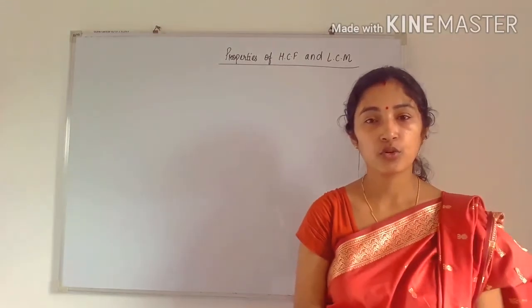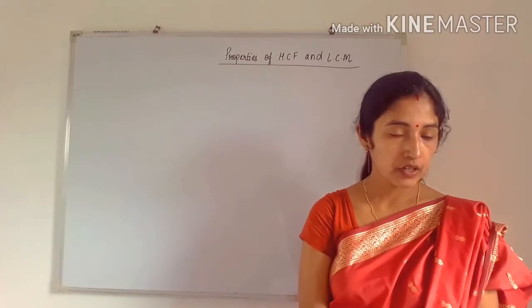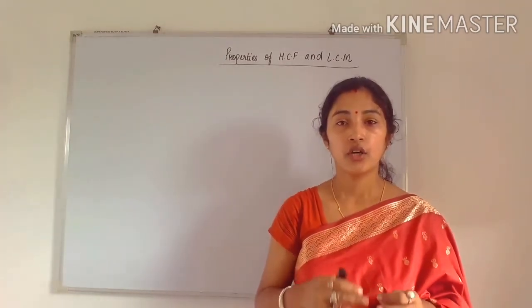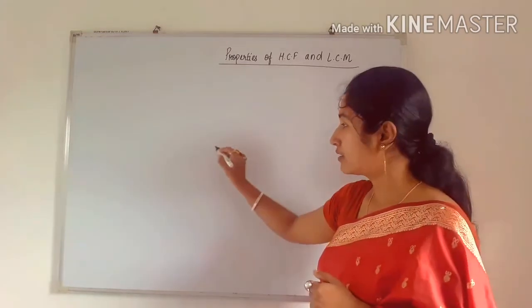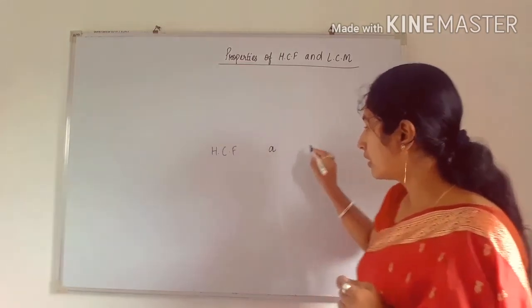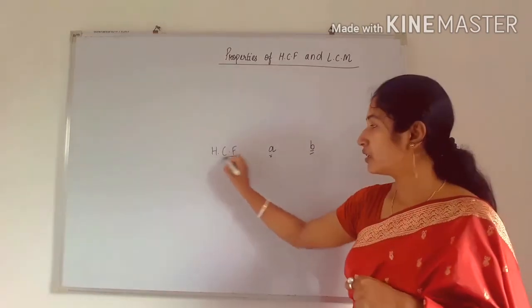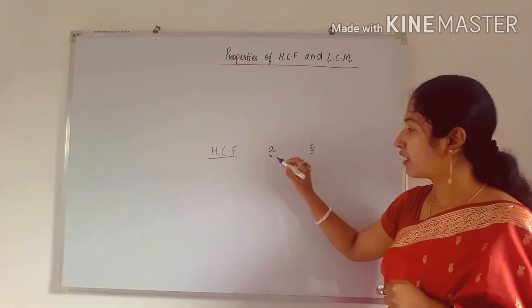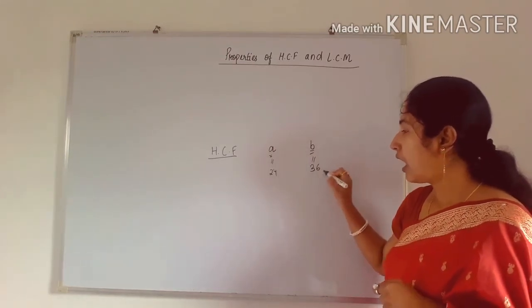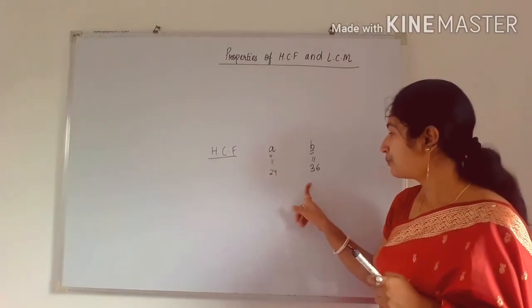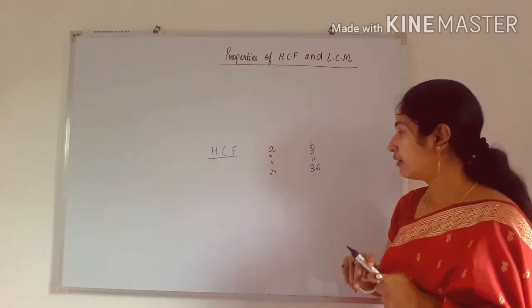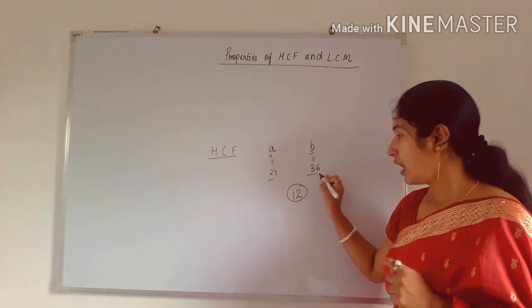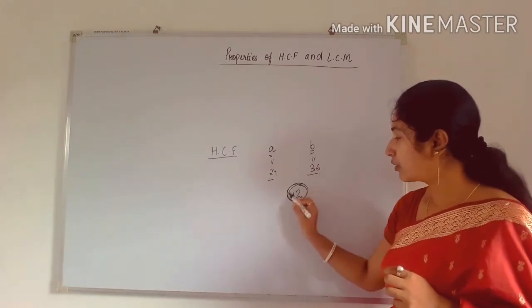There are different properties of HCF and LCM. First property: given any two numbers and their HCF, there are three things — the two numbers and the HCF. The relation is that HCF is the smallest among the three. For example, if the two numbers are 24 and 36, the HCF is 12. Among 12, 24, and 36, the number 12 is the smallest.